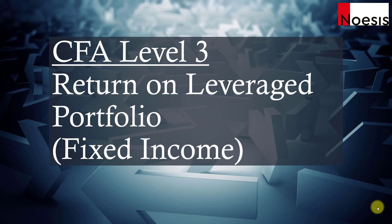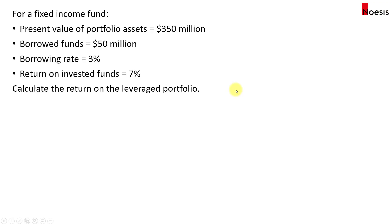In this video, we will look at the returns on a leveraged portfolio for a fixed income fund. Let's say for a fixed income fund, the present value of the portfolio assets is $350 million. From this, there is borrowed funds of $50 million, and the borrowing rate is 3%. The return on the invested funds of $350 million is 7%.